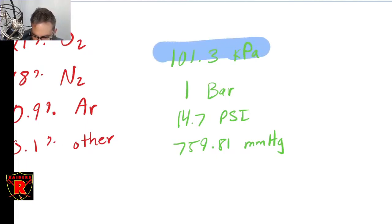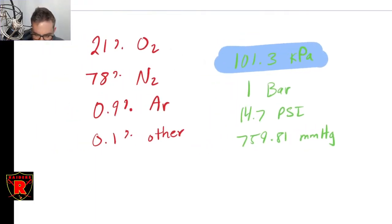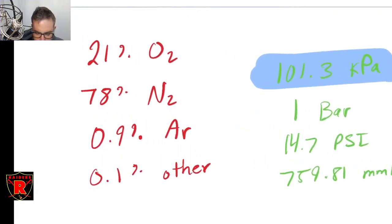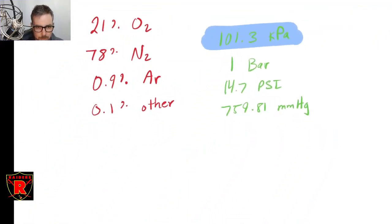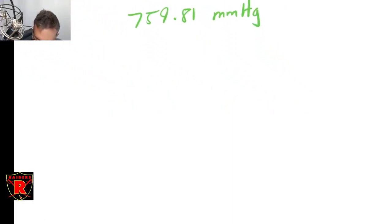I'm going to stick with kilopascals because that's what's mentioned in the textbook. That's the pressure at sea level — how much the air is pushing on you. What partial pressure means is that the pressure of each gas — how much each gas pushes on you — is the percentage of that gas in the atmosphere times the total pressure. So if oxygen makes up 21% of the atmosphere, then 21% of this pressure is the pressure of oxygen.